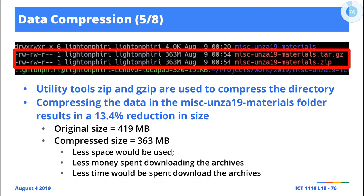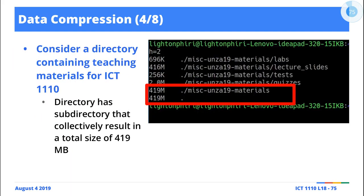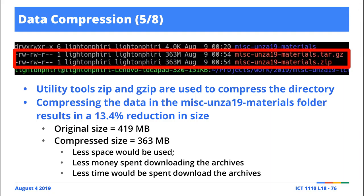Another example: I pulled all the resources we're using for this course. I removed the videos and audio obviously, because I was hoping I could share this with you. Observe the original size of the materials for ICT 1110 so far is 419 megabytes, but when compressed it's 363 megabytes. In this case the difference is about 13.4 percent, which isn't dramatic.